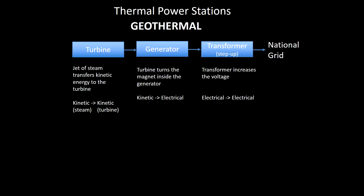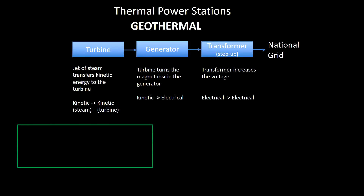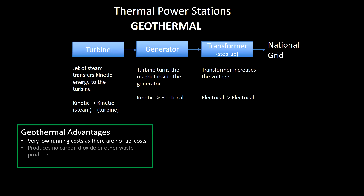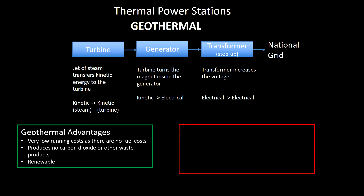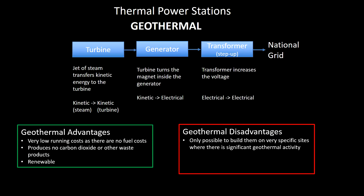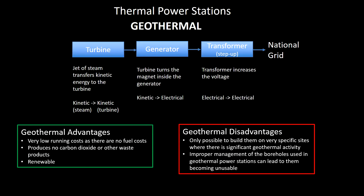Our final type of thermal power station is geothermal. This uses naturally occurring hot springs due to volcanic activity, where the steam comes from rather than being heated by fuel. Advantages: very low running costs as there are no fuel costs, no carbon dioxide because we're not burning anything, and it's renewable because the Earth's volcanic and tectonic activity will continue for the foreseeable future. Disadvantages: very limited sites — you can only build one where there is geothermal activity — and it's possible to mismanage the boreholes used to extract the steam and make the station unusable for some time.